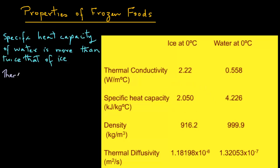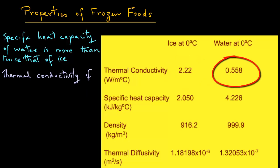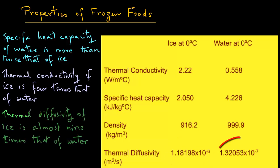The thermal conductivity of ice at 2.22 watts per meter degree Celsius is 4 times that of water, that is 0.558 watts per meter degree Celsius. Similarly, the thermal diffusivity of ice is 9 times that of water.